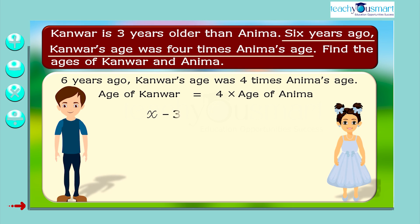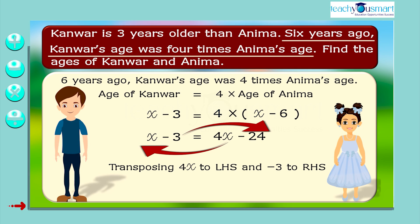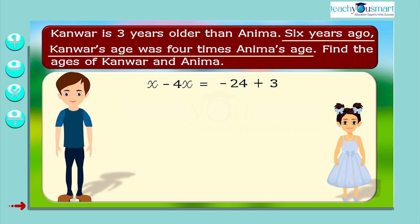That is, X minus three equals four times X minus six. That is, X minus three equals 4X minus 24. Transposing 4X to LHS and minus three to RHS: X minus 4X equals minus 24 plus three. Minus 3X equals minus 21.